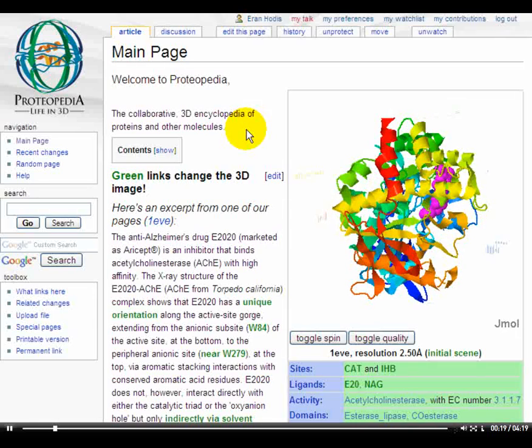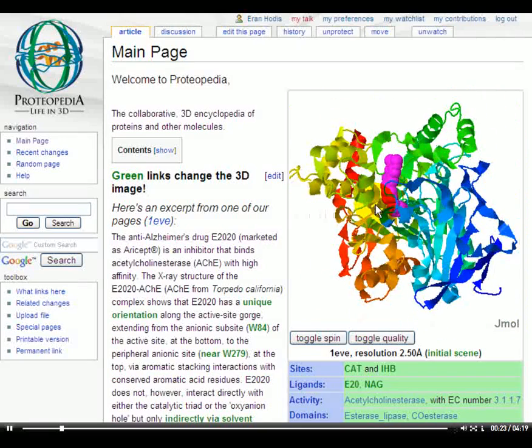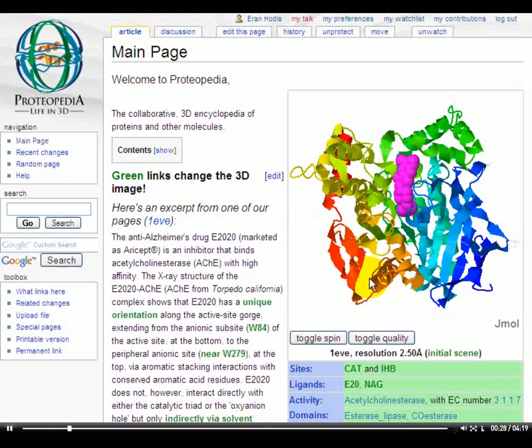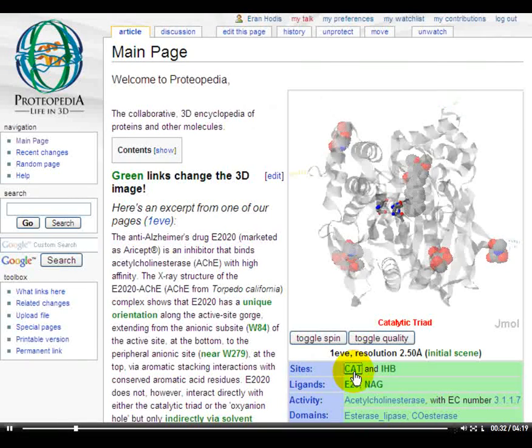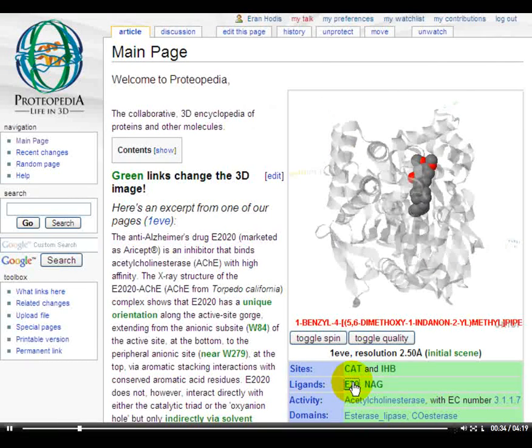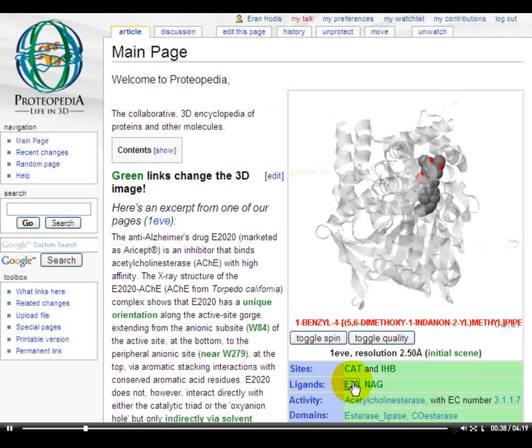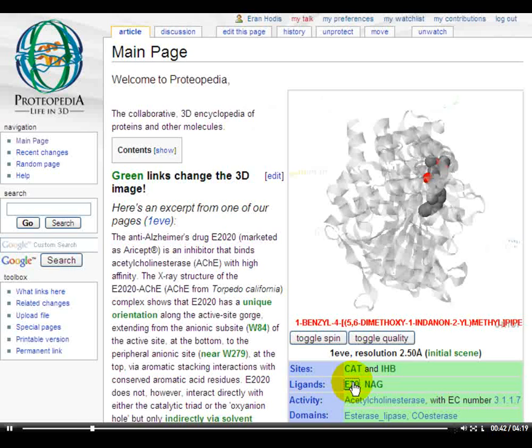That's why you'll find rotatable and zoomable structures on most every page in Proteopedia. Often there will also be green links below the three-dimensional structure that highlight functional sites or ligands. These green links are the essence of Proteopedia because they display structural information in an intuitive manner.